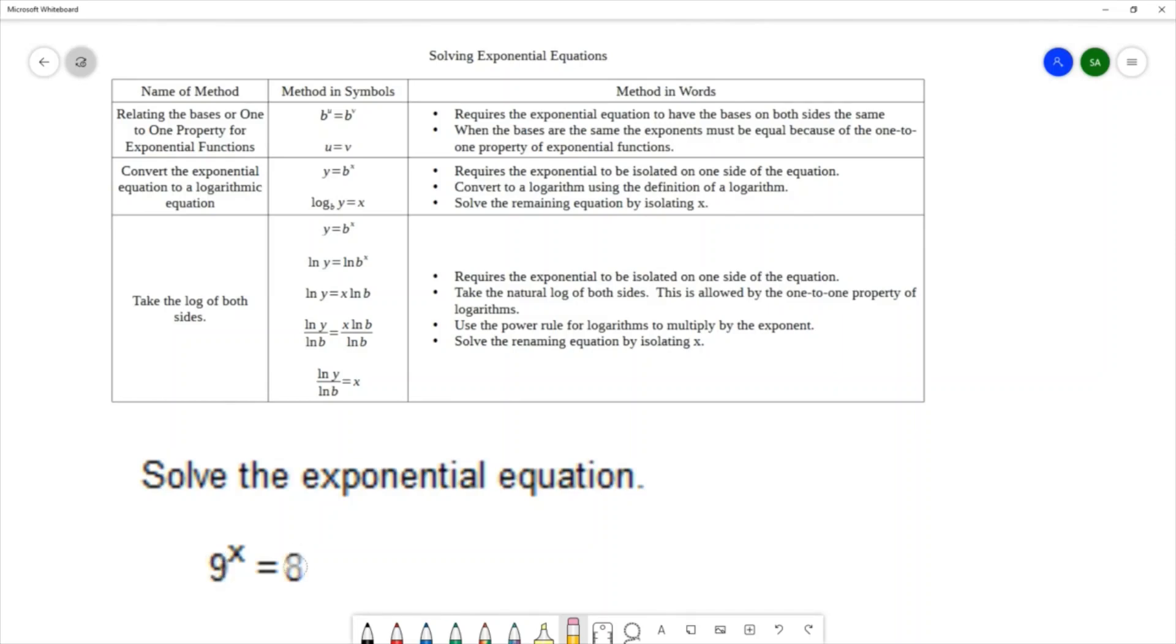On the right-hand side, 8 is the same thing as 2 times 2 times 2, or 2 cubed, and that would give you a base of 2 on the right. That still wouldn't match each other because we'd have a base of 3 on the left and a base of 2 on the right, and there aren't any other ways that I could change these bases very easily. So that first method of relating the bases will not work for this example.